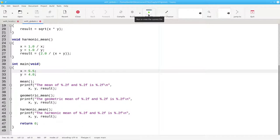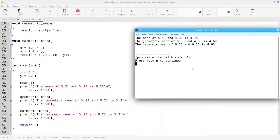Let's see what happens when we run this program. This time, everything is great until we get to the harmonic mean and find out that our 5.5 and 4.0 have been changed.